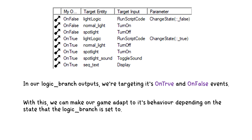Here are all the outputs within our logic branch. We are targeting the two outputs: on true and on false. With this, we can make our game adapt its behaviour depending on the state that the logic branch is set to.